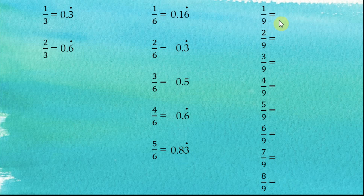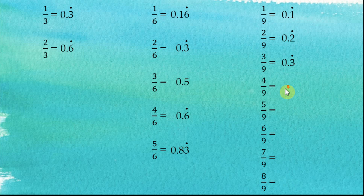How about 1 over 9? This is easy. 1 over 9 is equal to 0.1 recurring. 2 over 9 is 0.2 recurring, 3 over 9 is 0.3 recurring, and then 0.4 recurring, 0.5, 0.6, 0.7, and 0.8. So this is easy, right?